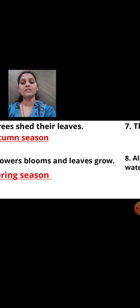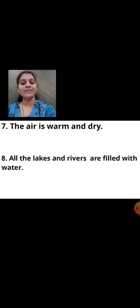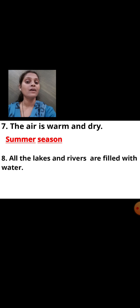Next: The air is warm and dry. When is the air warm and dry — in monsoon season or in summer season? Correct, in summer season. In summer season the air is warm and full of heat, that means warm and dry.